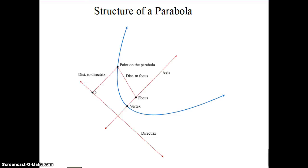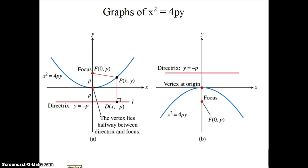Here is a picture of a parabola where the directrix line is slanted rather than horizontal or vertical, and you can see the equidistant part of that definition. The vertex is equidistant between the directrix and the focus, and all the other points on the parabola are also equidistant. This further illustrates the relationship between the directrix, the focus, and the vertex.